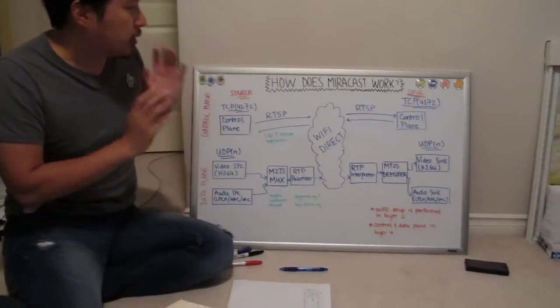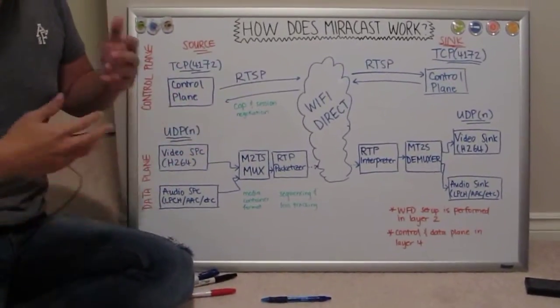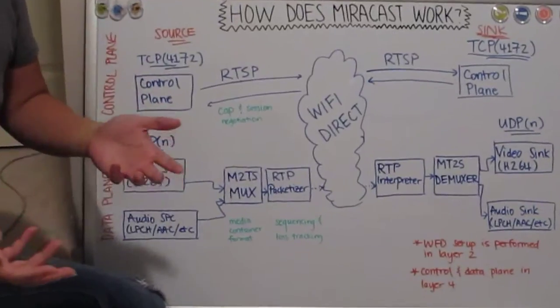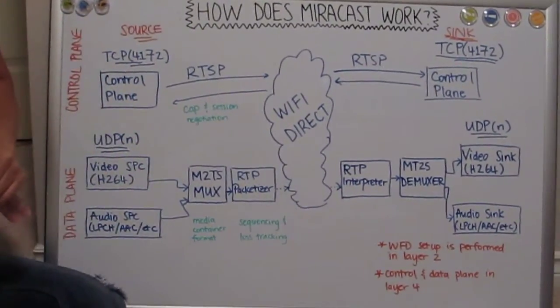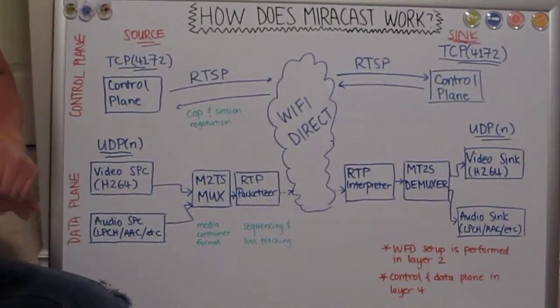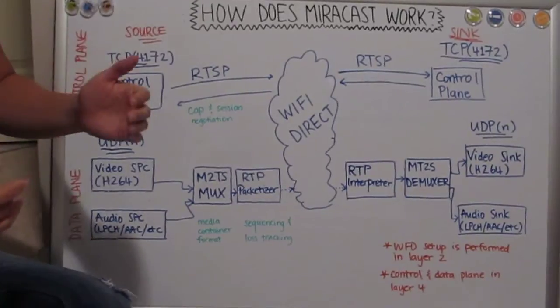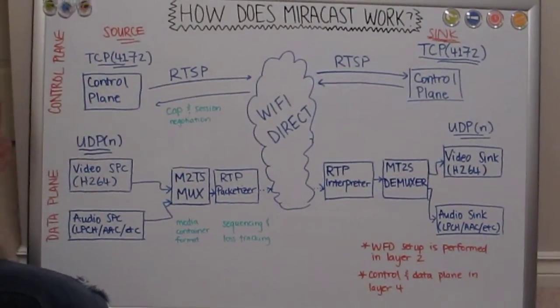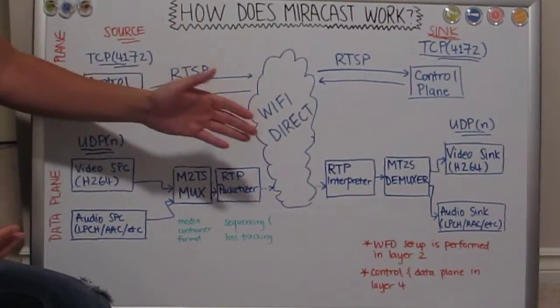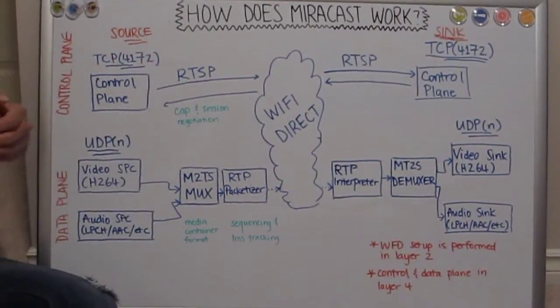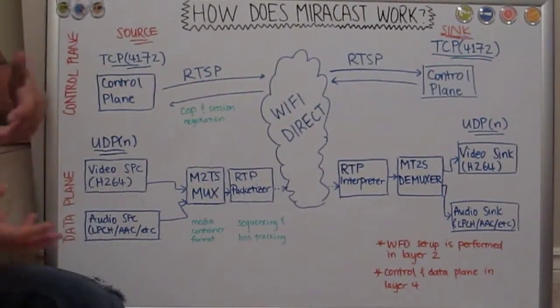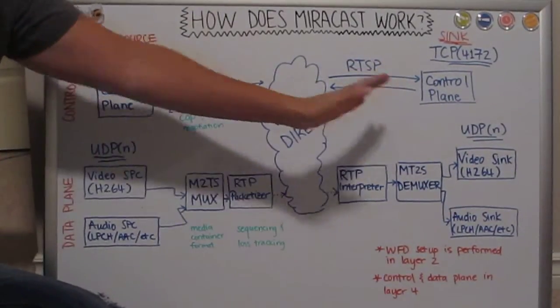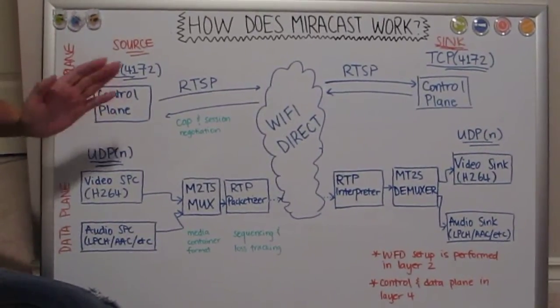So Miracast is built on top of Wi-Fi Direct. Wi-Fi Direct is a specification that allows two wireless endpoints to connect to each other directly without going through a router and you need specialized hardware support for that. And so after the two wireless endpoints have established a Wi-Fi Direct connection, that will be layer three and below. And then after that, the sink will assign an IP address to the source. So the source is typically your phone and the sink will be the Pyrocast or any commercialized Miracast receiver. So that's layer three.